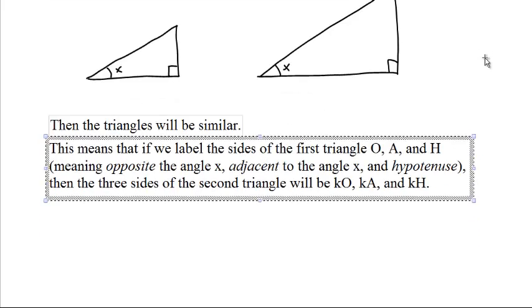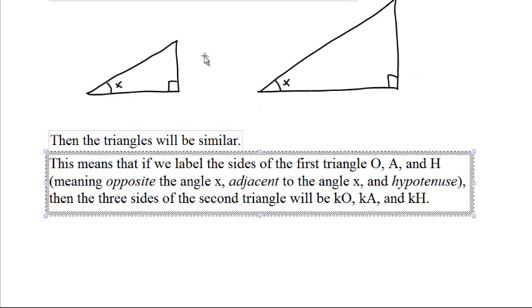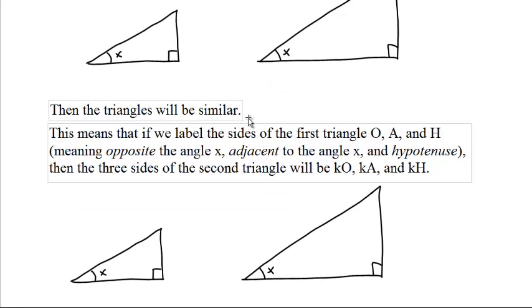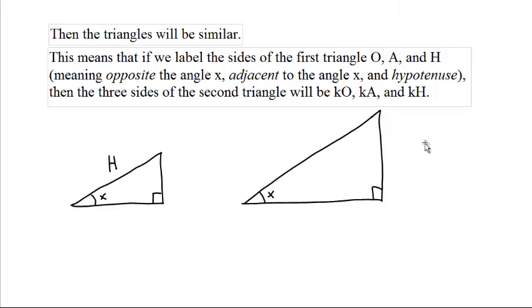So if we label the three sides of the first triangle O, A, and H - this is traditional - O for opposite the x, A for adjacent to the x, and H for hypotenuse, the longest side, then the three sides of the other triangle, O, A, and H.